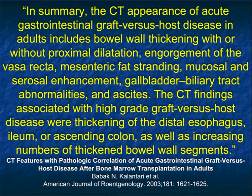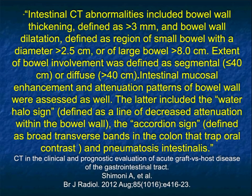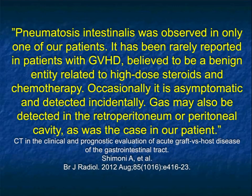The CT appearance of acute graft-versus-host disease in the GI tract includes bowel wall thickening with or without proximal dilatation, engorgement of the vasa recta, mesenteric fat stranding, and mucosal and serosal hyperenhancement — exactly the findings we just saw in the two cases. Bowel wall involvement is typically very extensive, with prominent mucosal enhancement. The water halo sign is defined as a line of decreased attenuation within the bowel wall. Pneumatosis can also occur with graft-versus-host disease, sometimes related to high-dose steroids or chemotherapy.